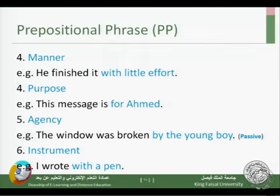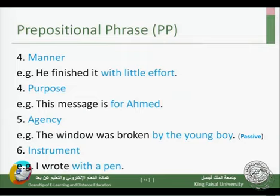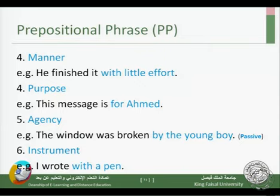In passive voice, we have 'to be' plus the past participle — 'was broken.' We can say 'The window was broken' as a complete sentence, but when we add 'by the young boy,' we mention the agent who performed the action. Seventh: instrument — something you use to do something with. 'I wrote with a pen' — 'with a pen' is a prepositional phrase expressing instrument.